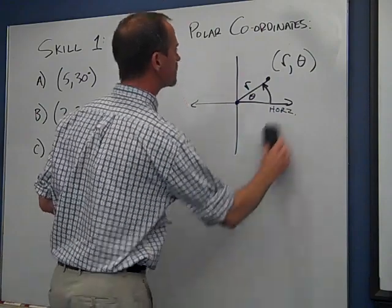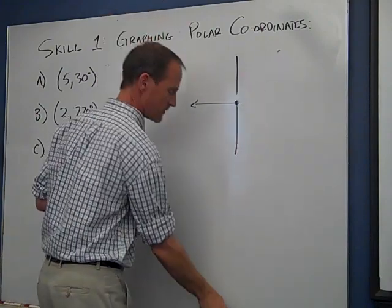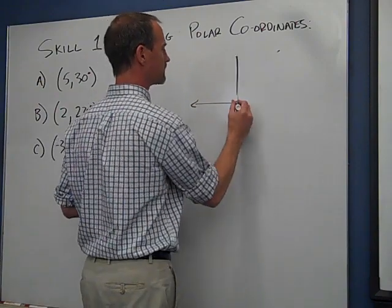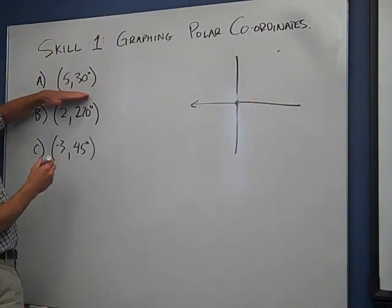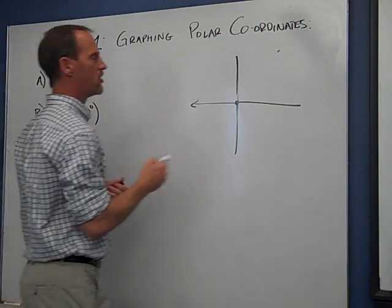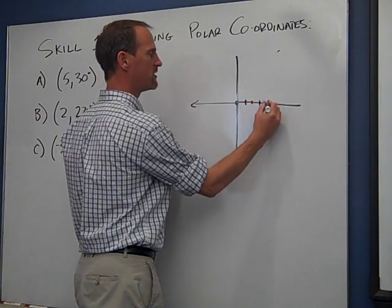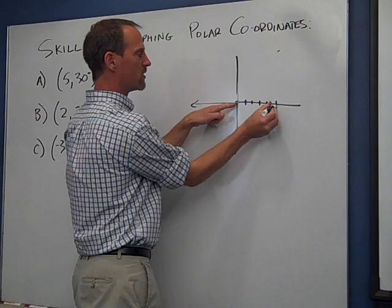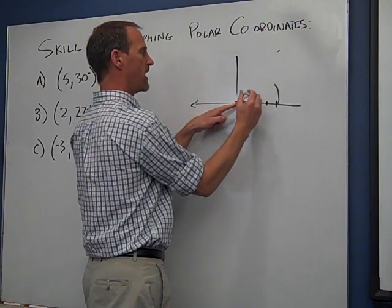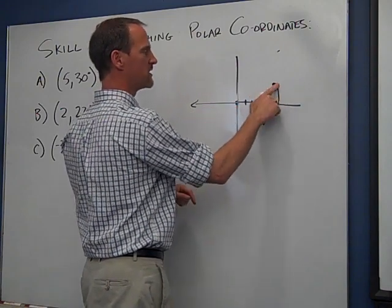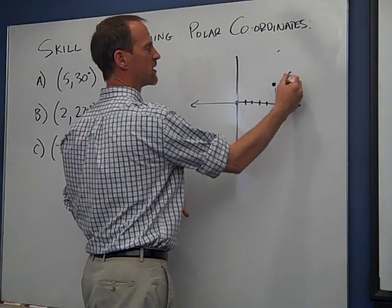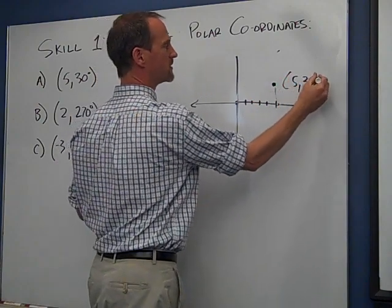Okay, so how do we do this? Well, let me just do a couple of examples. If that's our graph, and we've got 5, 30 to graph, we're going to go out one, two, three, four, five, and then we'll rotate this point up until we're at an angle of 30 degrees. So this point here is represented by 5, 30 degrees.